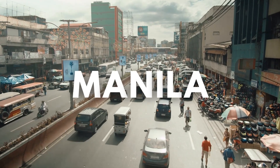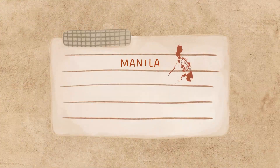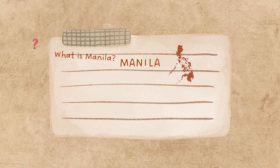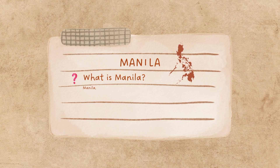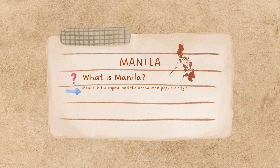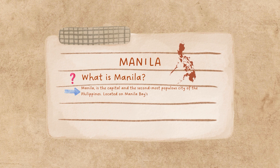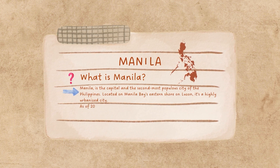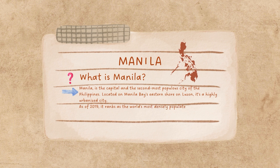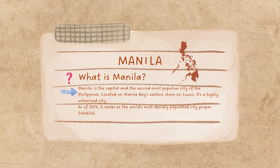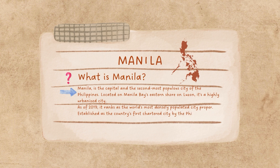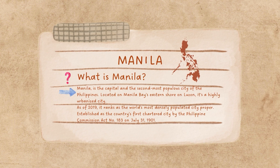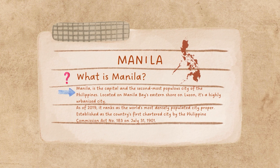Let's illustrate with an example. Suppose we're focusing on Manila, the capital of the Philippines. An overly detailed card might read: What is Manila? Manila is the capital and the second most populous city of the Philippines. Located on Manila Bay's eastern shore on Luzon, it's a highly urbanized city. As of 2019, it ranks as the world's most densely populated city proper. Established as the country's first chartered city by the Philippine Commission Act number 183 on July 31, 1901. That's a lot to recall.